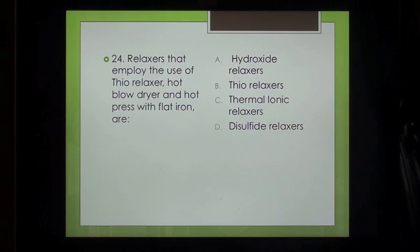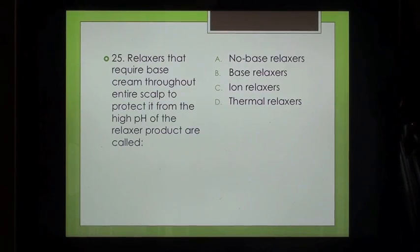Question 24: Relaxers that employ the use of thio relaxer, hot blow dryer and hot press with flat iron are: A. Hydroxide relaxers, B. Thio relaxers, C. Thermal ionic relaxers, D. Disulfite relaxers.